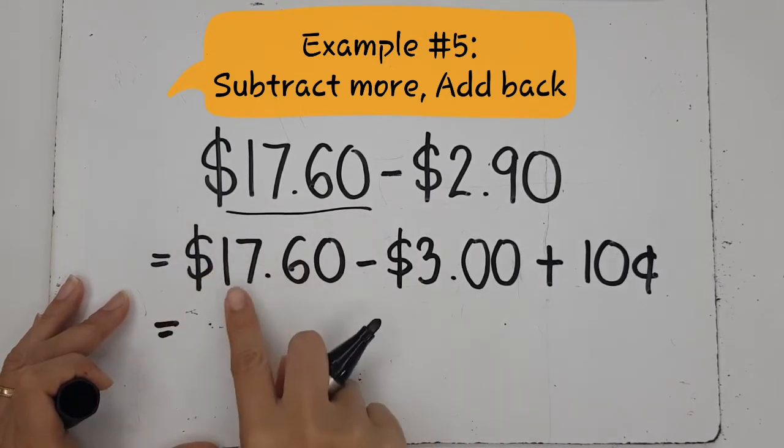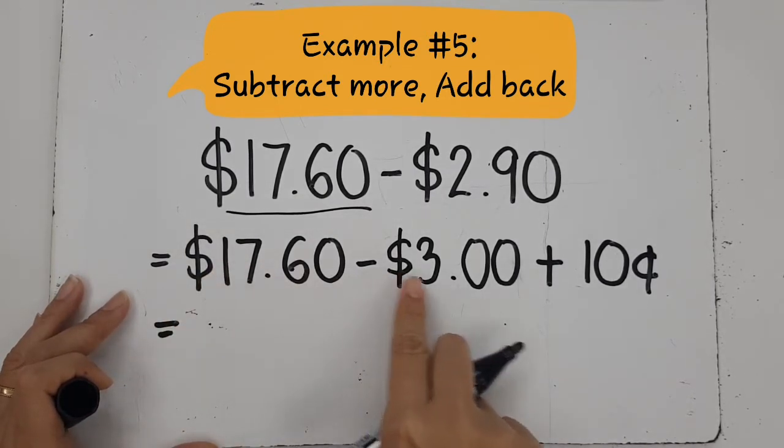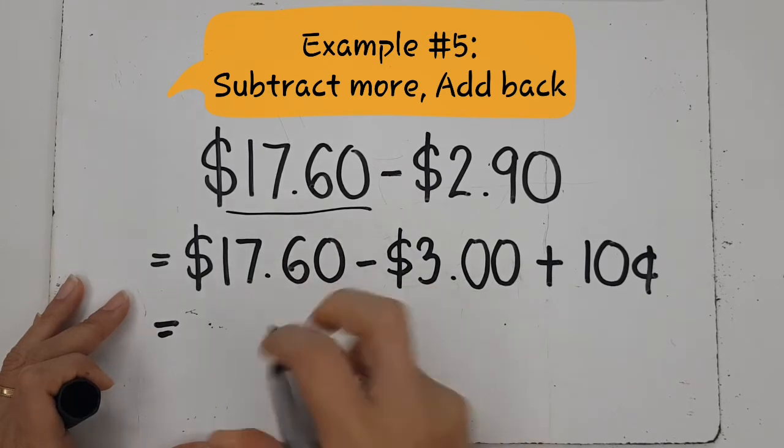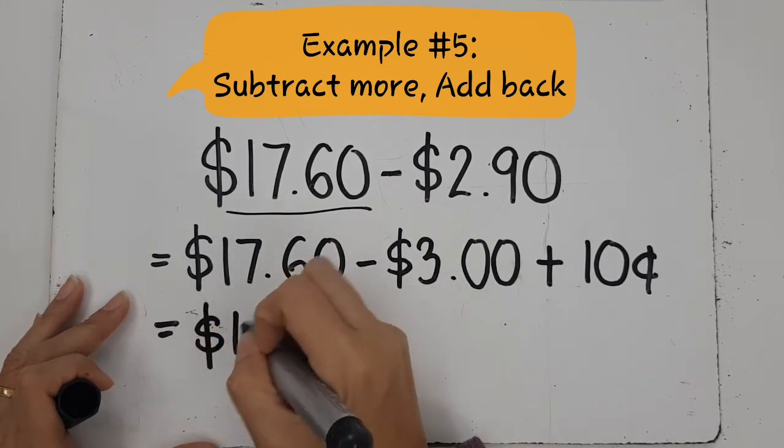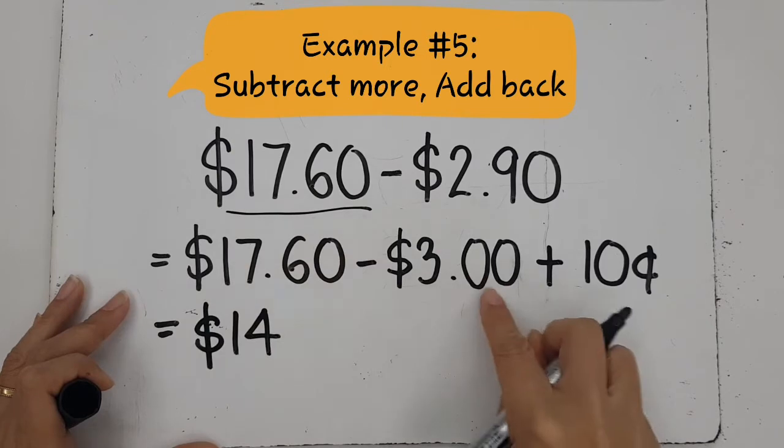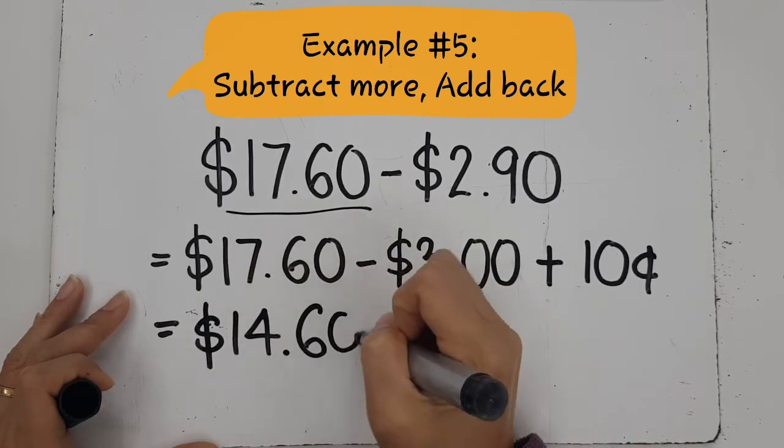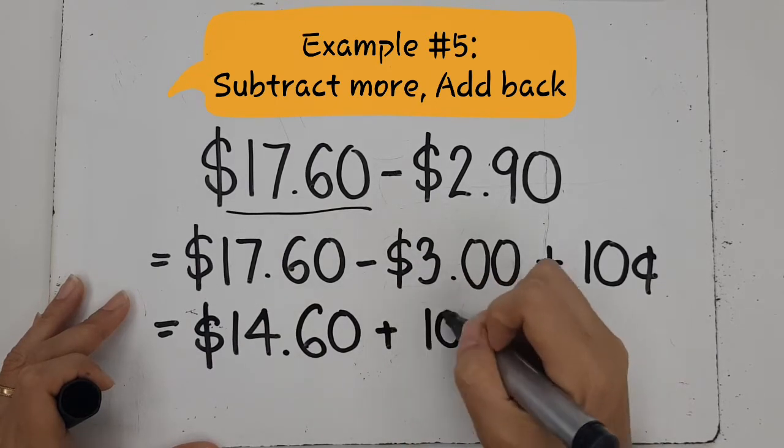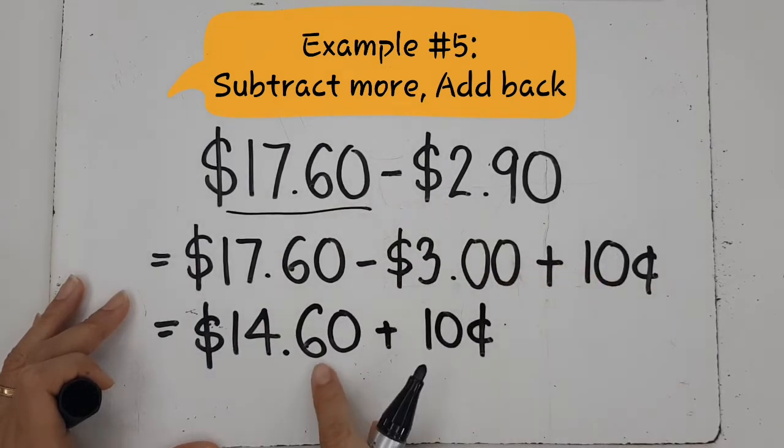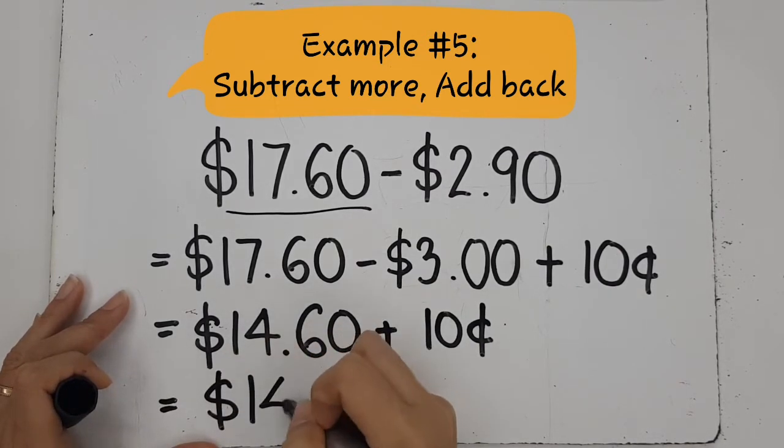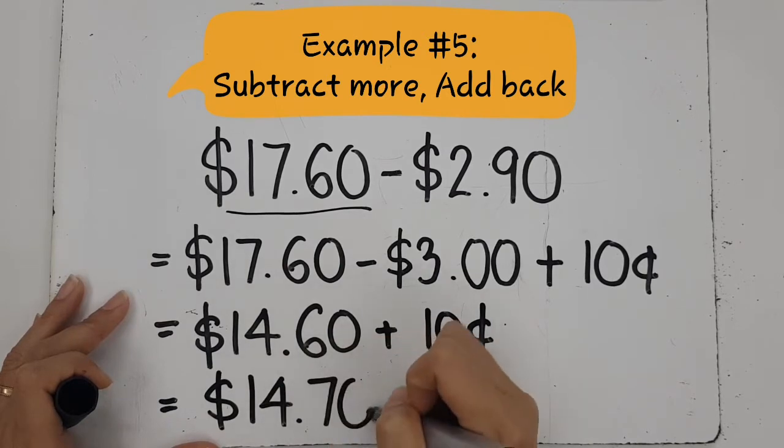So I am going to start doing $17.60 minus $3. $17 minus $3 is $14. And I did not touch the cents. 60 cents minus nothing is still $0.60. And then I have to add another $0.10. If I add $0.10, that means instead of $0.60 now, I am going to have $0.70. And that is the answer.